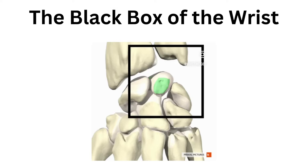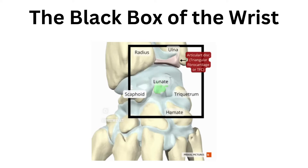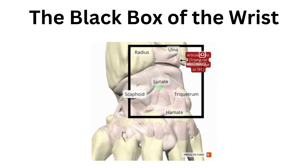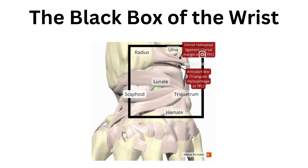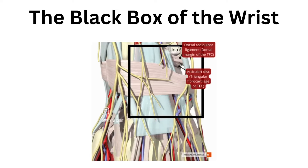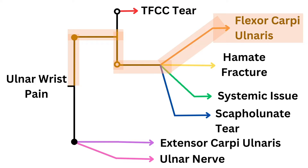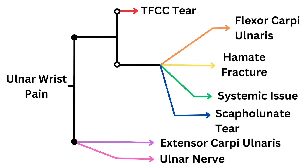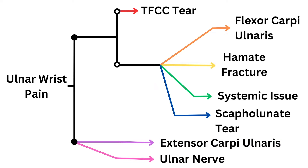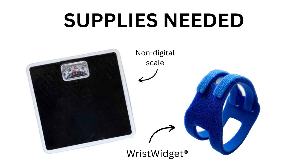The ulnar side of the wrist is known as the black box of the wrist because it's very complex and there's a lot going on in such a small space. If you've injured the ulnar side of your wrist, we're going to teach you how to use this diagram to understand your injury through a series of questions. Pause as needed to go through the questions and assessments. All you'll need is a non-digital scale and a wrist widget.